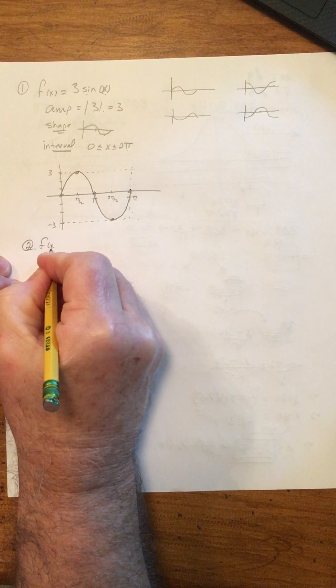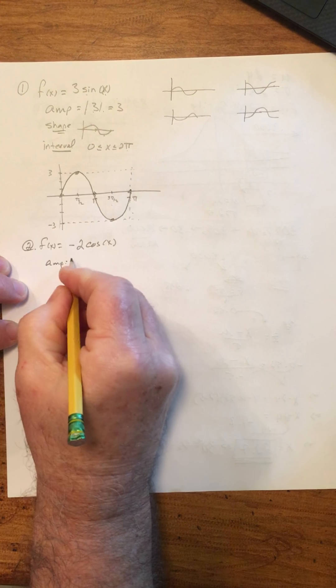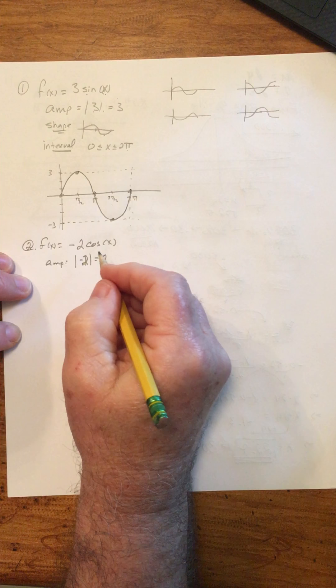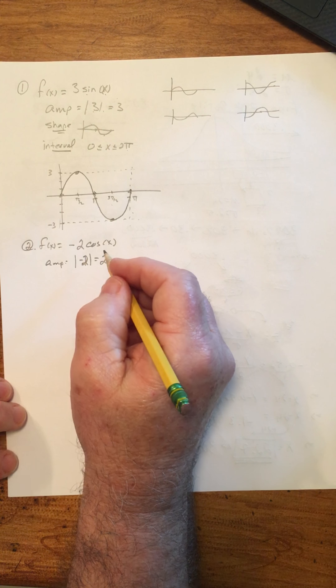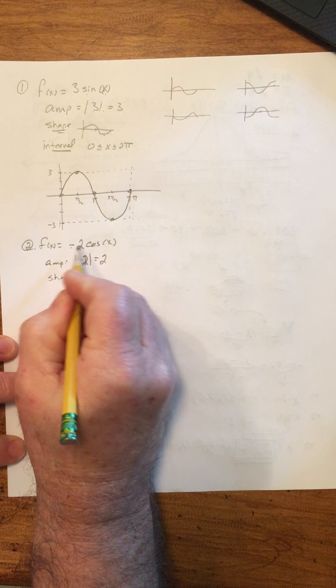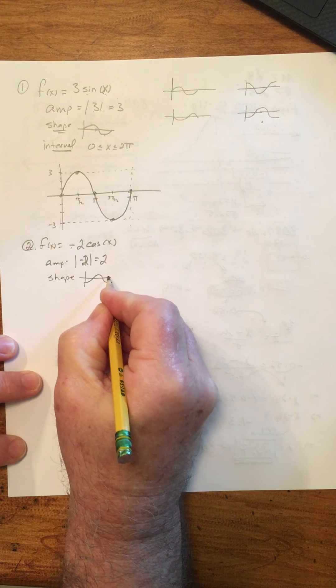The second one: we have f(x) = -2cos(x). The amplitude - this is where the absolute value is going to earn its keep. The absolute value of -2 is 2, so the distance between the peak and the nodes or the nodes and the trough is going to be 2 units. The basic shape: this is the cosine curve, it's a negative cosine, so the basic shape is the negative cosine curve starting at the trough, node, peak, node, trough. The interval is again the standard interval because there's no change of period. The interval is the same as the standard 2π.